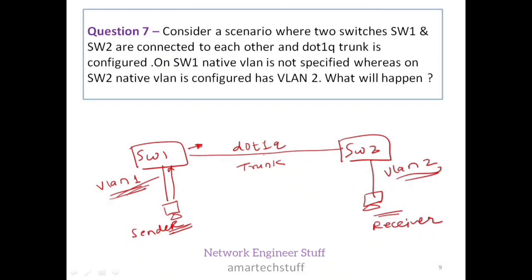With dot1Q, traffic for the native VLAN goes untagged — no VLAN tag is inserted in the frame. When this untagged frame is received on Switch 2's trunk port, Switch 2 assumes it belongs to its own native VLAN, which is VLAN 2. So Switch 2 forwards the traffic to the VLAN 2 PC. A frame sent by a sender in VLAN 1 is received by a receiver in VLAN 2.